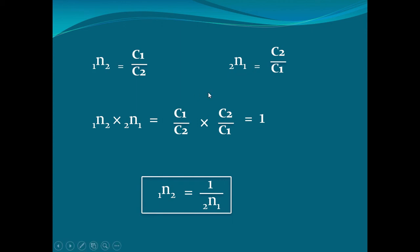Let's say 2N1 is C2 over C1. C1 over C2, C2 over C1 — it is a third one. 1N2 is C1 over 2N1.